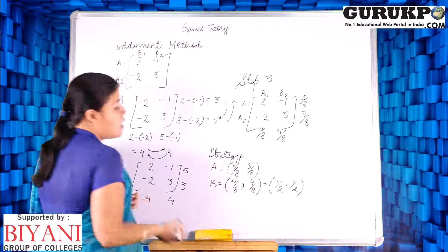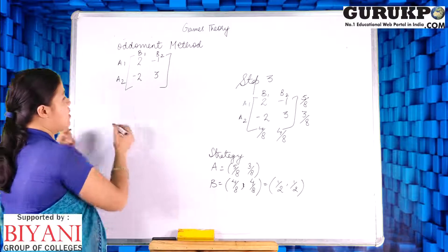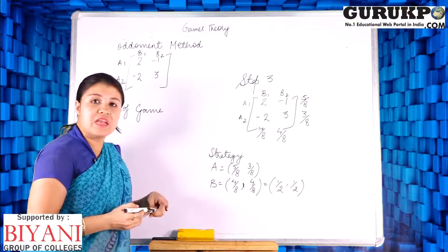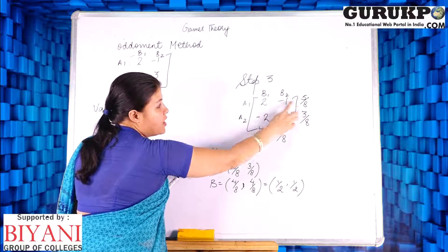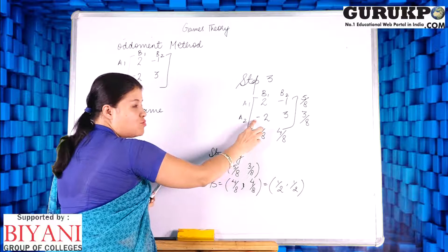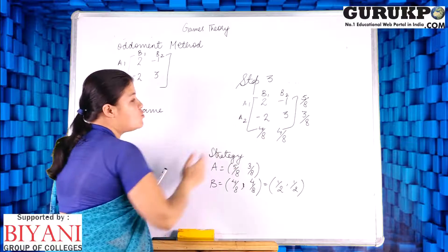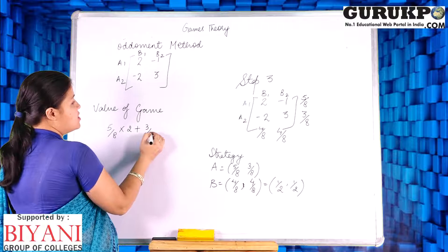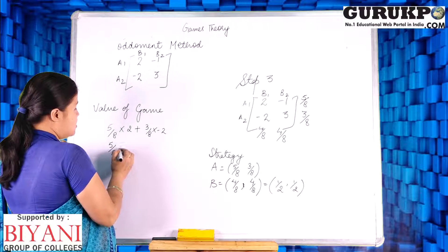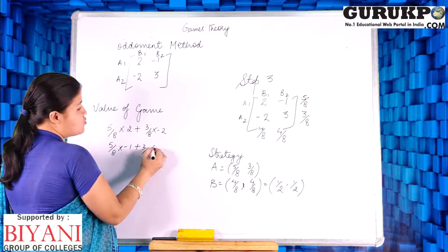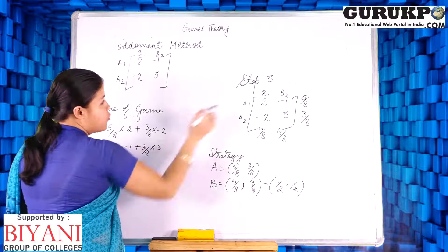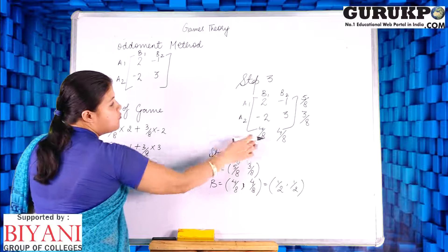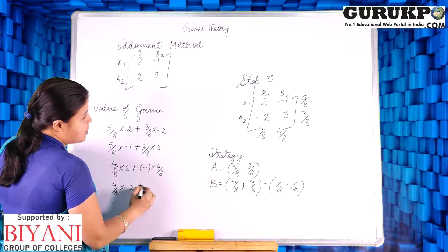To find the value of the game, we can use any of four methods. Method 1: (5/8)×2 + (3/8)×(−2). Method 2: (5/8)×(−1) + (3/8)×3. Method 3: (4/8)×2 + (4/8)×(−1). Method 4: (4/8)×(−1) + (4/8)×3. In all four methods we will get the same value of the game.